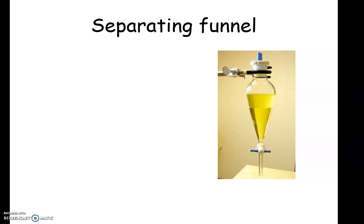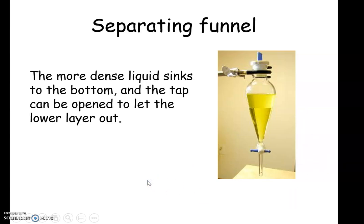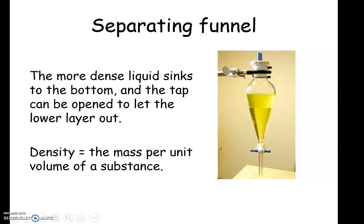The first type of mixture we're going to look at separating is a mixture of two or more immiscible liquids, and we use a piece of apparatus called a separating funnel. You've got a picture here that shows you what a separating funnel looks like. How that works is if the liquids have different densities, the more dense liquid will sink to the bottom, and we can open up that tap at the bottom to let that lower layer out. Just to recap from your physics lessons, density equals the mass per unit volume of a substance — we can think of it as how heavy a liquid is in comparison to another.